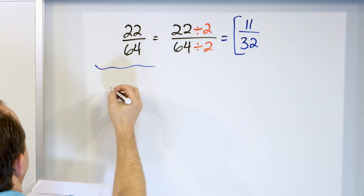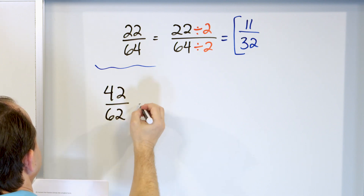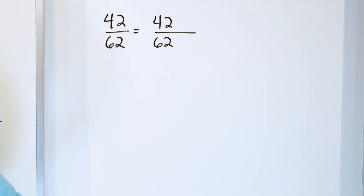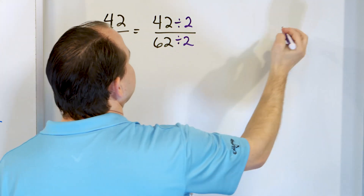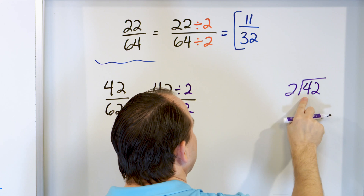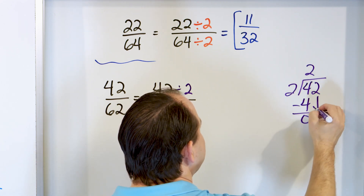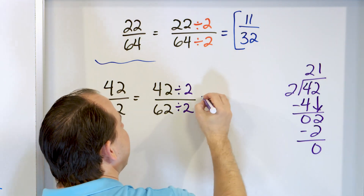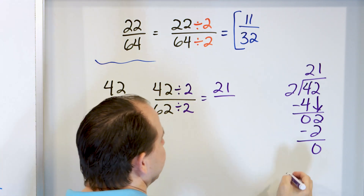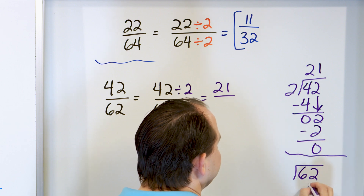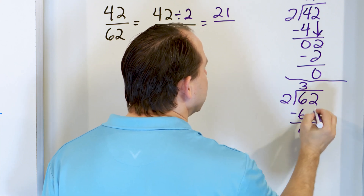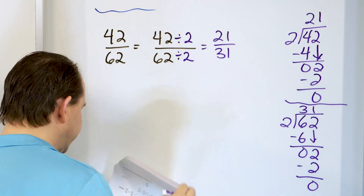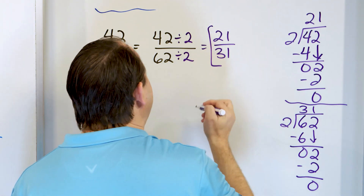Problem 9: 42/62. Both even, so divide top and bottom by 2. Working through the division: 42 divided by 2 - 2 times 2 is 4, subtract, bring down the 2, 2 times 1 is 2, remainder zero - gives 21. And 62 divided by 2 - 2 times 3 is 6, subtract zero, drag the 2 down, 2 times 1 is 2, remainder zero - gives 31. So 21/31, and there's nothing I can divide by to simplify further. That's the final answer.